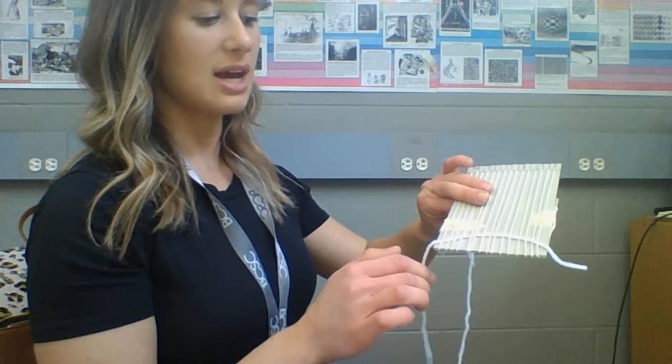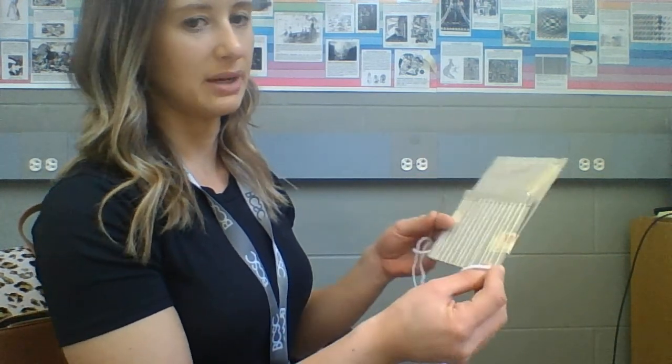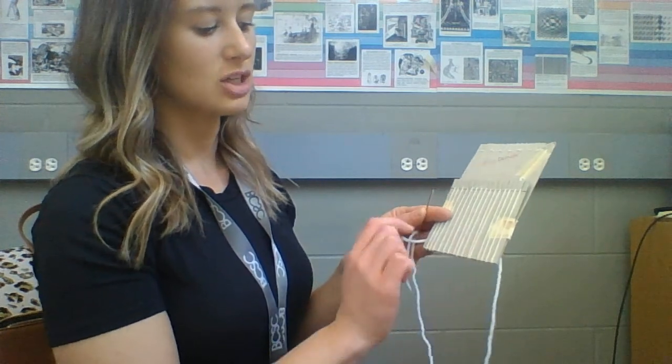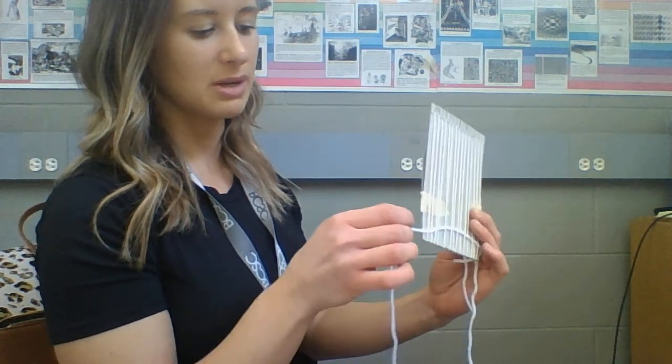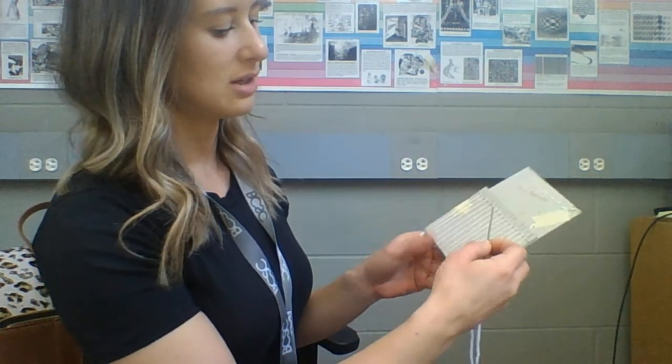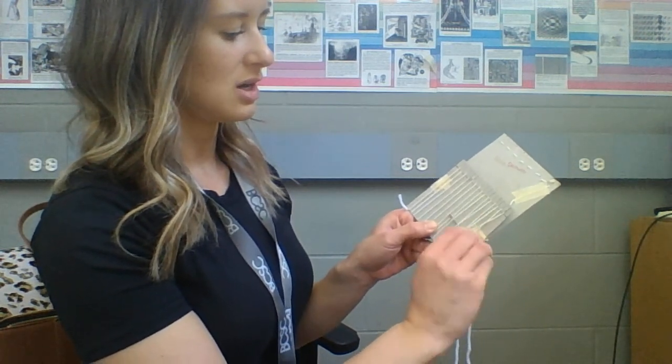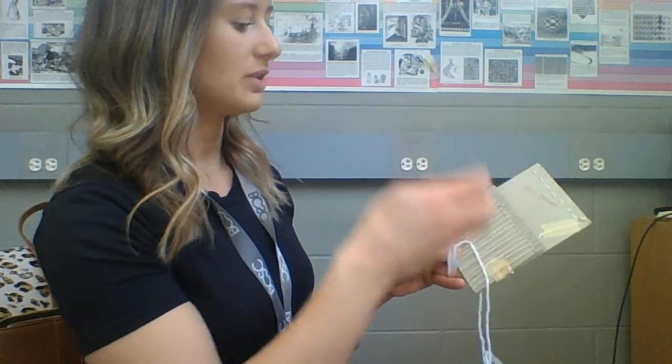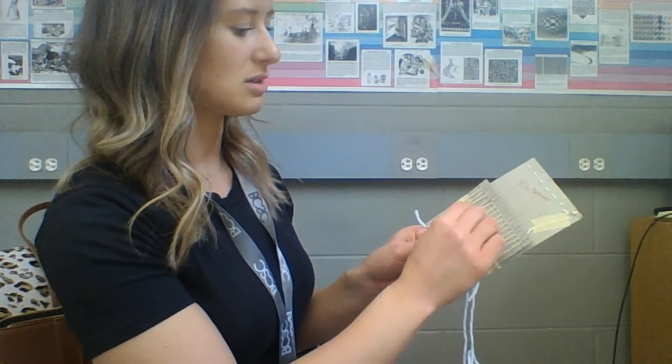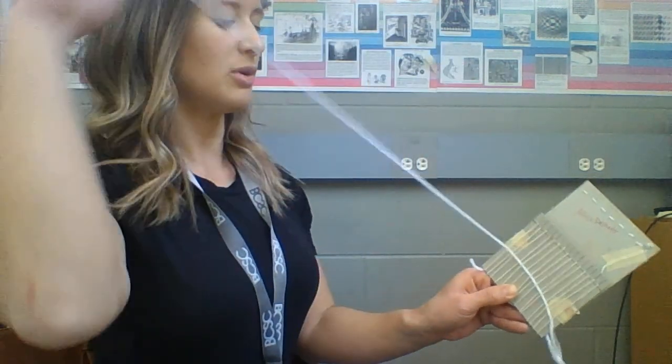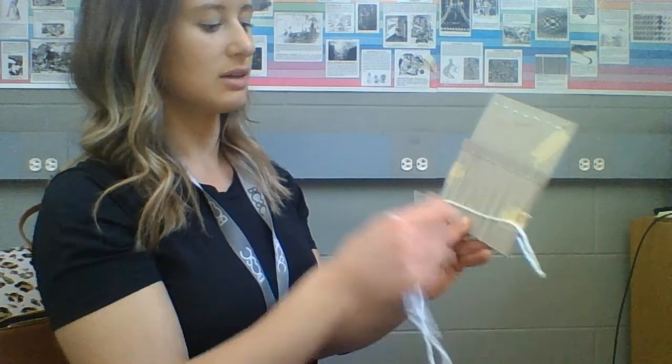When I get to the end I'm gonna flip it and hug this edge, so I'm not gonna come to the opposite edge, I'm coming to the edge right next to it. And again I'm gonna continue under, over, under, under, over, all the way across. I'm gonna pull it so that I'm hugging the cardboard, there's not a loop.